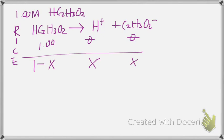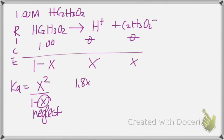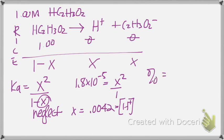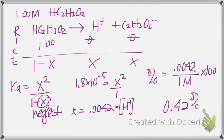1 molar is really concentrated, so we're going to be able to neglect X. We like that when we can do that, right? So this is going to end up being X squared over 1 minus X, neglect. And then when we put in the 1.8 times 10 to the negative 5th, equals X squared over 1, which X is going to be equal to 0.0042. So that is equal to our hydrogen concentration.